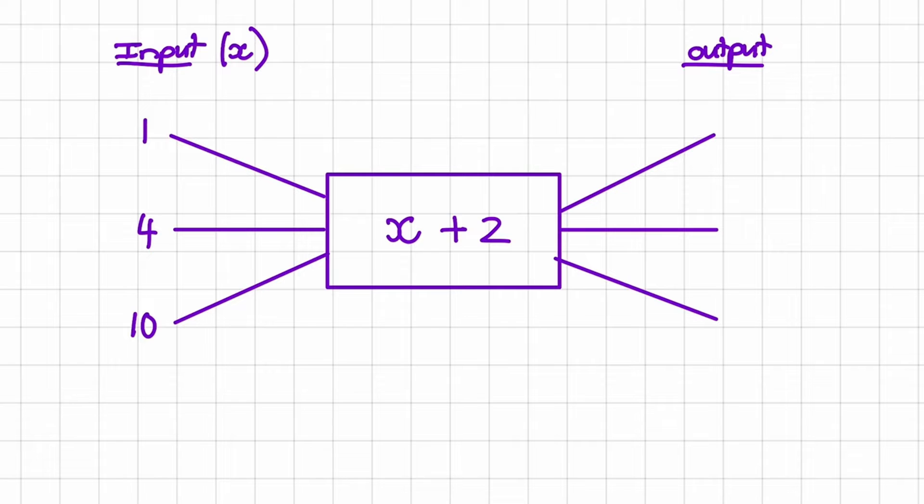So in our first example if I take 1 and I replace x with 1 it's 1 plus 2 and that answer is equal to 3. Then we have 4 and we input it in place of x so it is 4 plus 2 and that answer is 6. And lastly we have 10 and we replace x with 10. So that is 10 plus 2 and that is equal to 12.